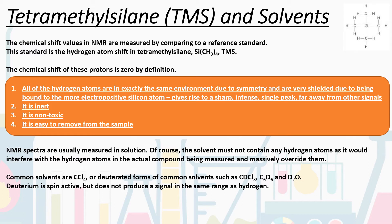Sometimes these deuterated solvents can be used as reference points instead of TMS. Even a common deuterated solvent like CDCl₃ will still have a very tiny percentage of residual protons — the CHCl₃ — which produces a peak in the NMR. This won't override everything like a normal hydrogen-containing solvent would. The residual proton peak for CDCl₃ comes at 7.26 ppm, and it's now very common to reference the spectrum to that peak rather than the TMS zero. The key requirement is no hydrogens in the solvent: CCl₄, CDCl₃, C₆D₆, D₂O.